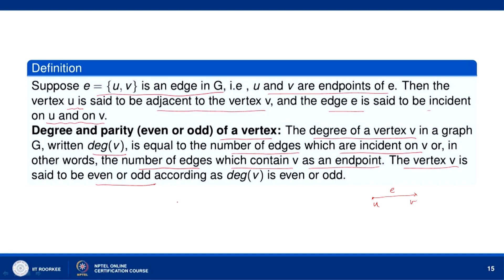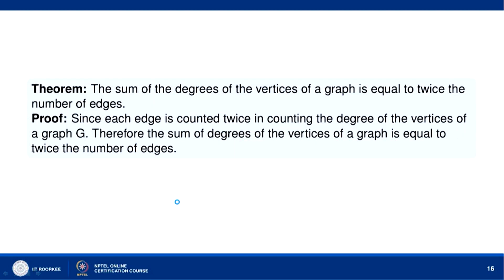Now let us consider this theorem: the sum of the degrees of the vertices of a graph is equal to twice the number of edges. This is because each edge is counted twice when counting the degree of the vertices. For example, if you have vertices U and V connected by an edge, then while counting the degree of U this edge is counted, and while counting the degree of V this edge is counted again. Therefore the sum of degrees of the vertices equals twice the number of edges.